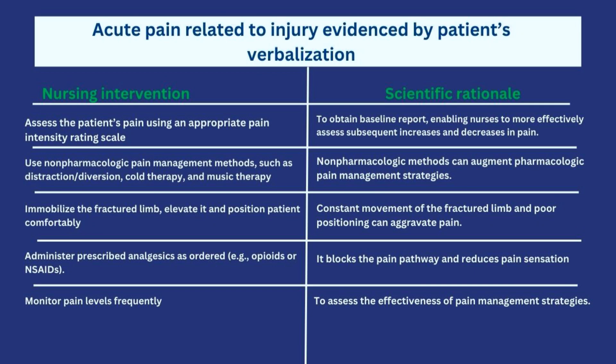The first intervention is to assess the patient's pain using an appropriate pain intensity rating scale. The rationale is to obtain baseline data so we can effectively assess subsequent increases or decreases in pain — recording the current level of 8 out of 10 allows comparison at the next assessment. The next intervention is to use non-pharmacological pain management methods such as diversion therapy, cold therapy, and music therapy to take the patient's focus away from pain.